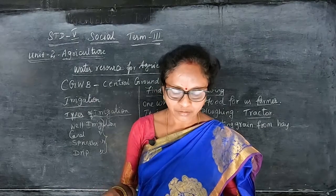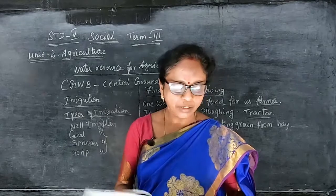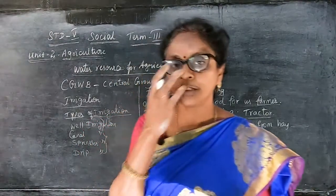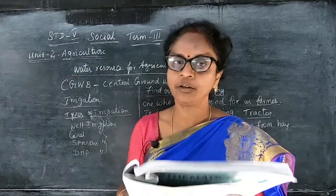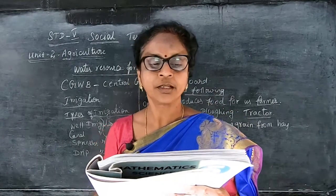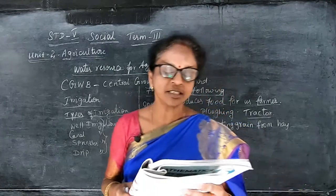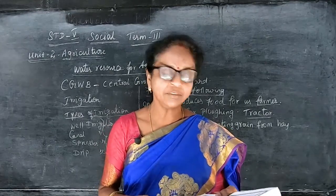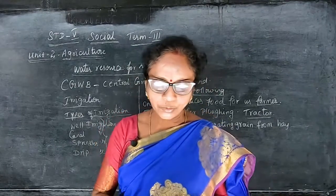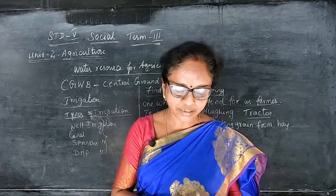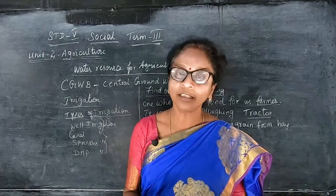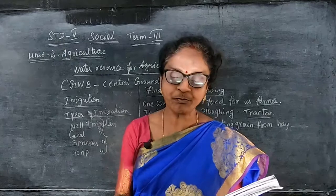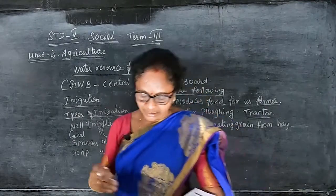Important crops in Tamil Nadu: Tamil Nadu has different types of soil, rainfall, and weather conditions across its districts, making it suitable for fruits, vegetables, spices, plantation crops, flowers, and medicinal and aromatic plants. Paddy is grown in large areas as rice is the main staple food. Principal food crops include rice, maize, jowar, bajra, kambu, ragi, and pulses such as Bengal gram, red gram, green gram, black gram, and horse gram.